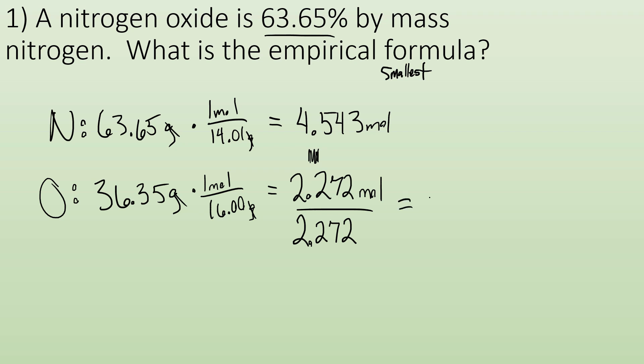So when I do it for oxygen, I end up with one. And when I do that for nitrogen, I end up with two. So now I have a whole number ratio. My empirical formula is N2O. That's the process.